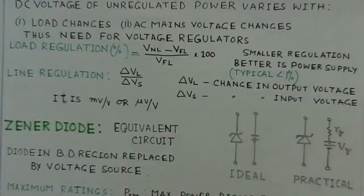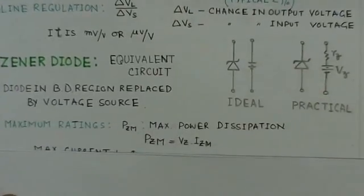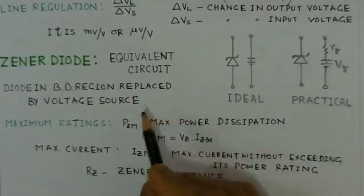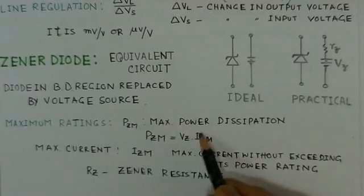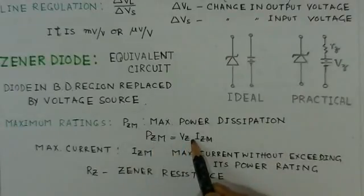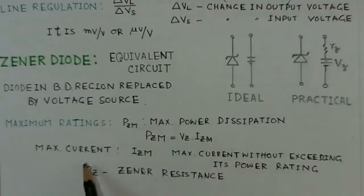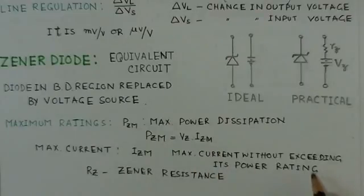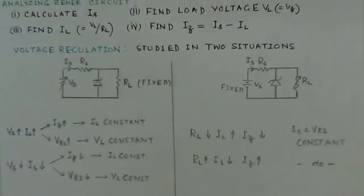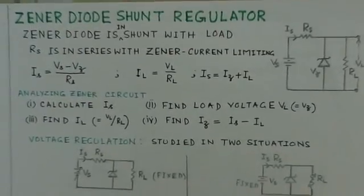The ratings of the zener diode are as follows. The maximum power dissipation is PZM, given by VZ — the zener voltage — multiplied by the maximum zener current. The maximum current is the maximum current that can flow without exceeding the power rating. RZ is the zener resistance. These are the key zener parameters.